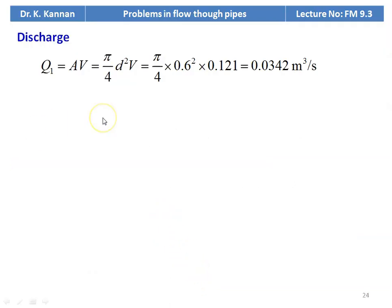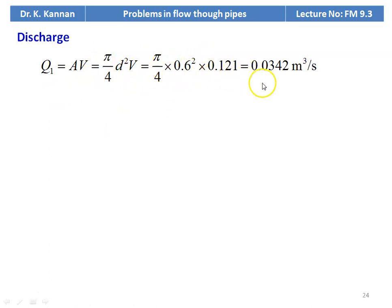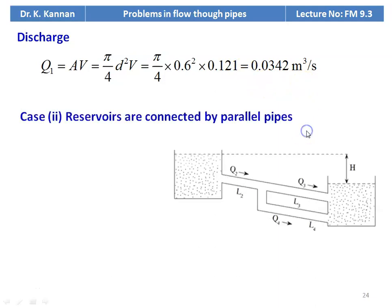The velocity of flow is 0.121 meters per second. The discharge when reservoirs are connected by a single pipe: Q1 = A × V = π/4 × D² × V = π/4 × 0.6² × 0.121 = 0.0342 meter cube per second.